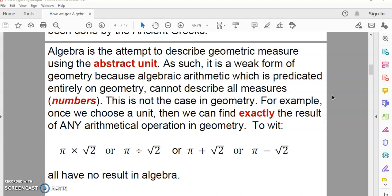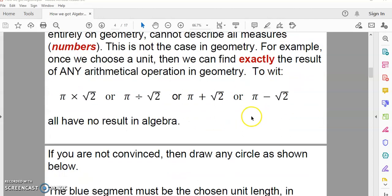And I'll show you in a little while that if you start off with a unit in geometry, you can define any magnitude exactly. So, for example, once we choose a unit, then we can actually find exactly the result of any arithmetical operation. We can find, for example, the result of this magnitude pi times the magnitude square root 2 or the quotient or the sum or difference. But all of these have no result in algebra whatsoever, because algebra has no numbers for these magnitudes. These are not numbers. These are symbols for magnitudes or sizes. Magnitude is just another word for size, or quantity.